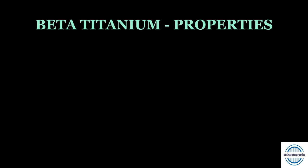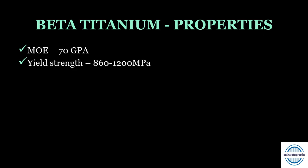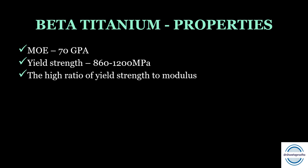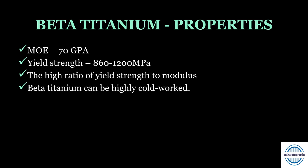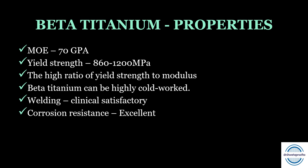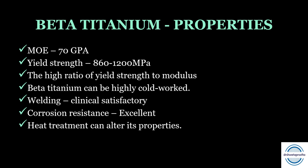Properties of beta titanium: modulus of elasticity is around 70 GPa and yield strength is around 860–1200 MPa. The high ratio of yield strength to modulus makes it useful in orthodontic appliances, allowing large elastic activations compared to stainless steel. Beta titanium can be highly cold-worked and bent into various configurations, with good formability compared to austenitic steel. Clinically satisfactory joints can be made by electrical resistance welding. Both forms have excellent corrosion resistance and environmental stability. However, heat treatment can alter its properties, so heat treatment of these wires is not recommended.